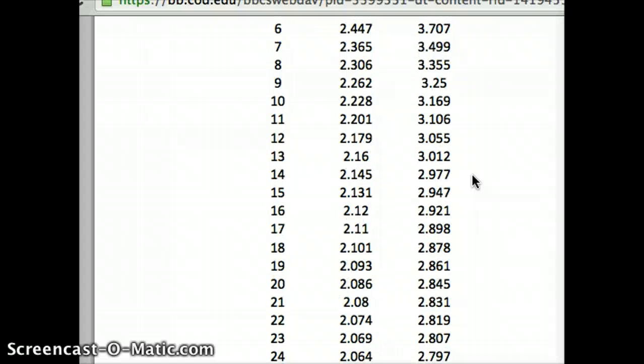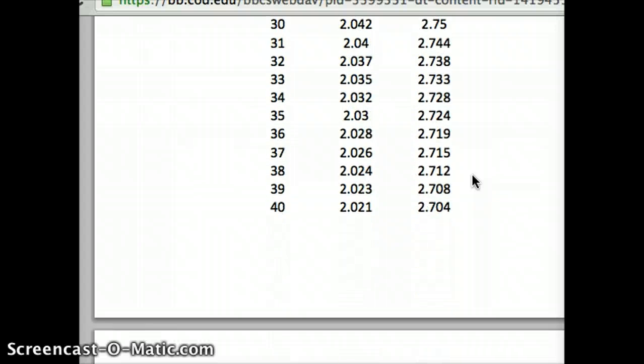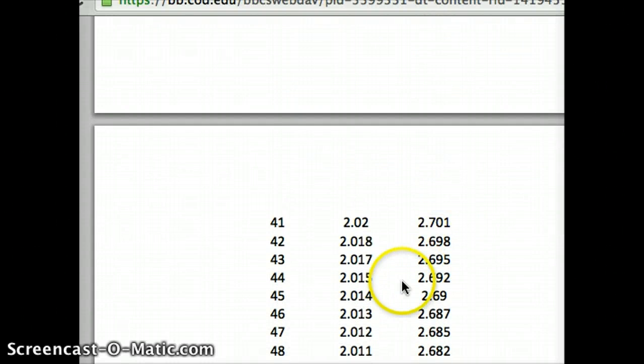We need 44 degrees of freedom. So we'll take it to 44 degrees of freedom. And the number we see here is 2.015. So 2.015 is the t-alpha by 2 that we need for 44 degrees of freedom for a 95% confidence interval.